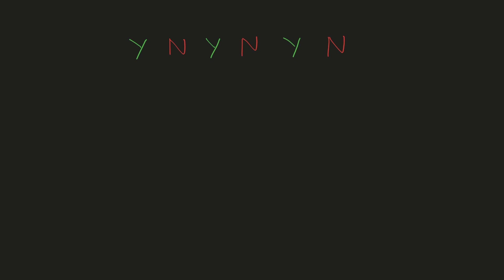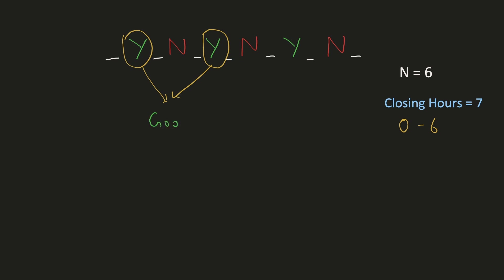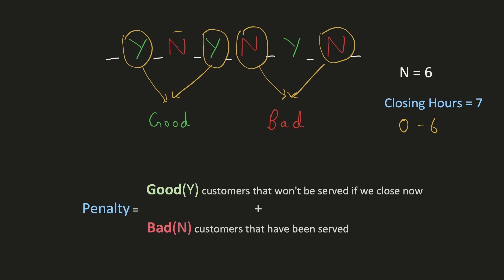Let's consider this string. There are 6 characters, hence the number of hours is 6, and we can close the shop at these hours — there are 7 total closing hours ranging from 0 till 6. Let's visualize this problem differently: consider both Y and N to be customers. Y represents a good customer who makes purchases, and N represents a bad customer who does not purchase anything. We should maximize the time open for good customers and minimize the time open for bad customers. The penalty for closing at a particular hour is the sum of good customers we won't serve plus the bad customers we have already served.